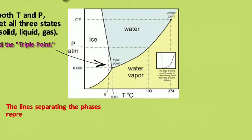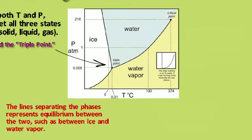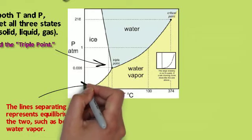The line separating the phases shows equilibrium between the two, such as between ice and water vapor. You're at equilibrium. You'll have both on the line in that container.